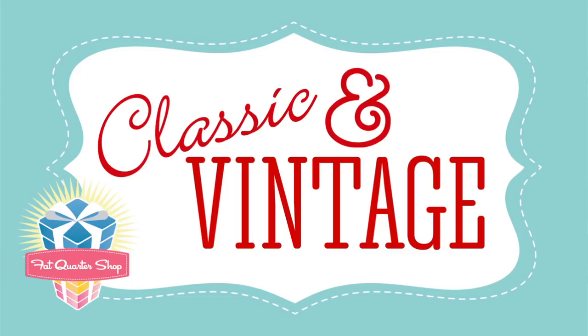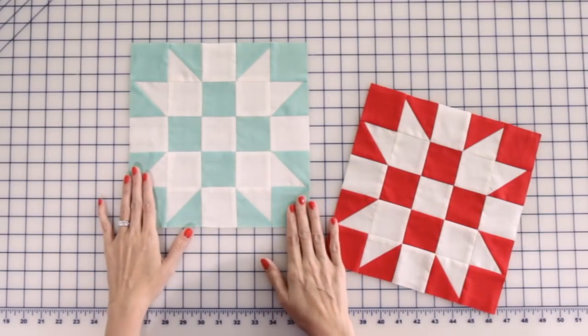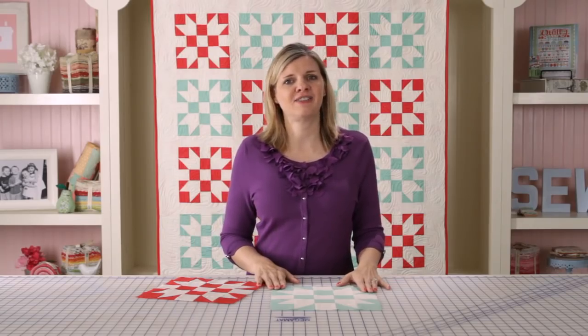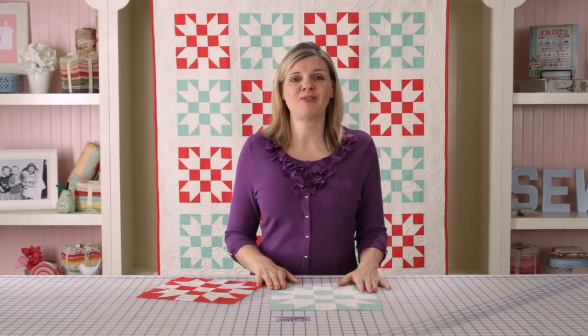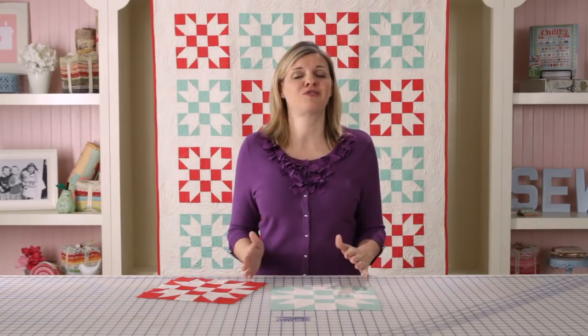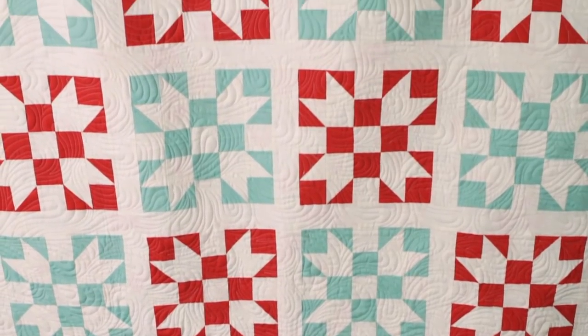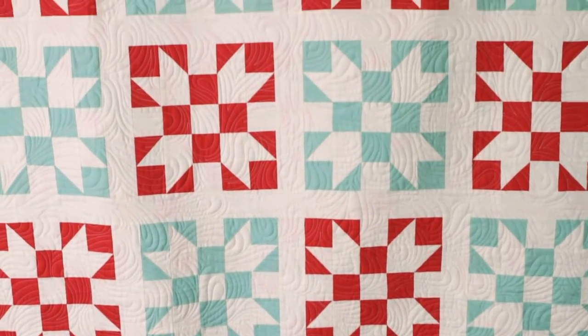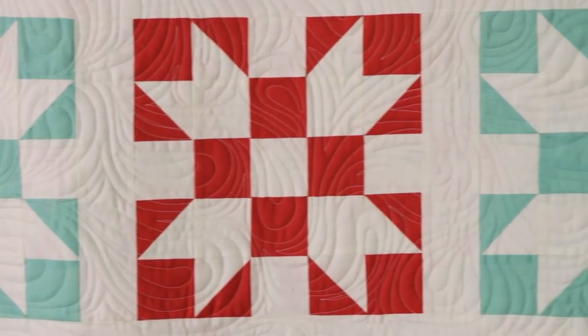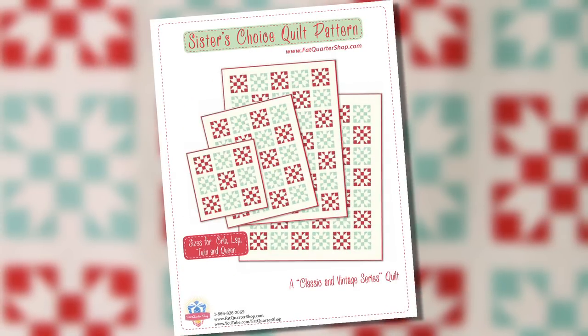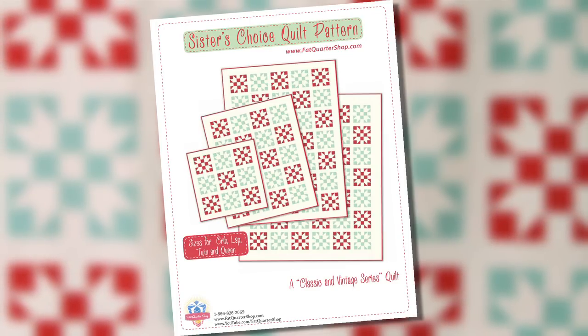Hi, I'm Kimberly with the Fat Quarter Shop, and I'm so excited to show you today our first classic and vintage quilt featuring the Sister's Choice block, which has been around over a century. In each of our classic and vintage episodes, we're going to show you how you take an old block and make it fresh for today. We're using the Scrumptious Collection by Bonnie and Camille from Moda Fabrics, and we just picked three of their solids, but you can do this in any variety you want. You can download our free pattern in four sizes at www.fatquartershop.com.